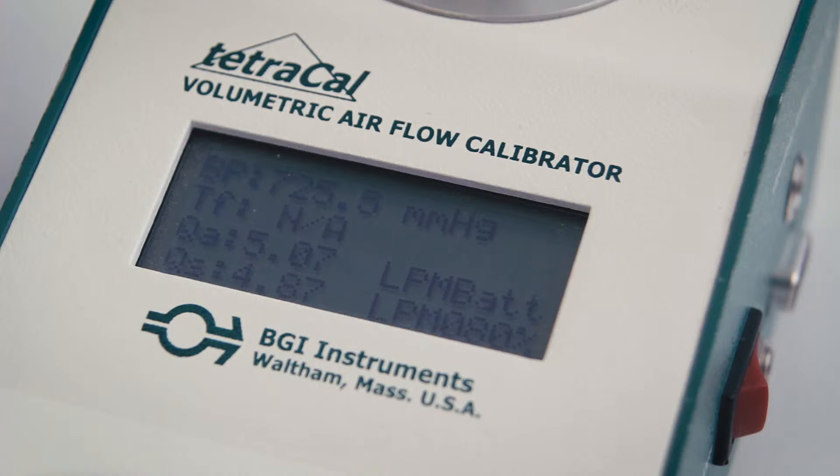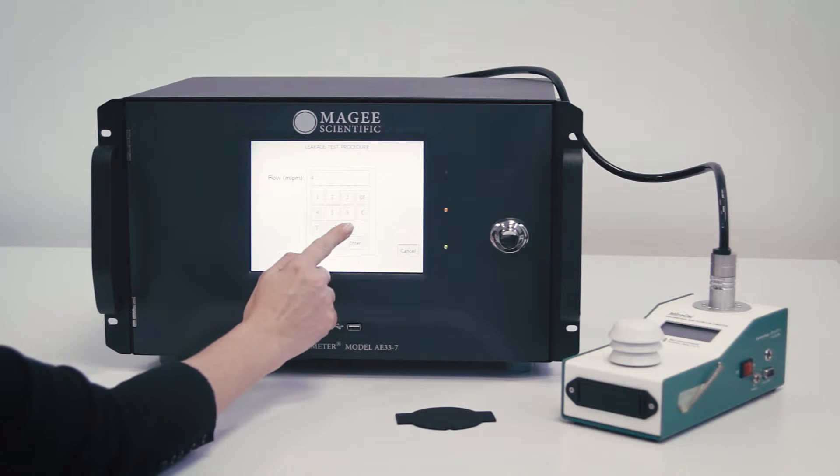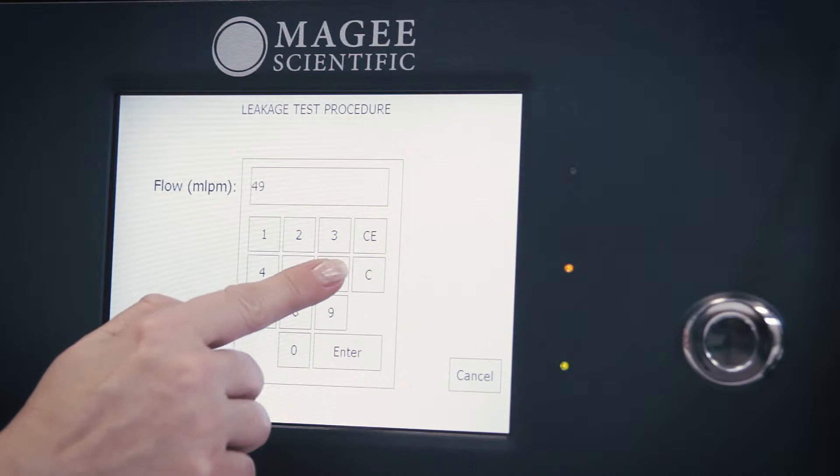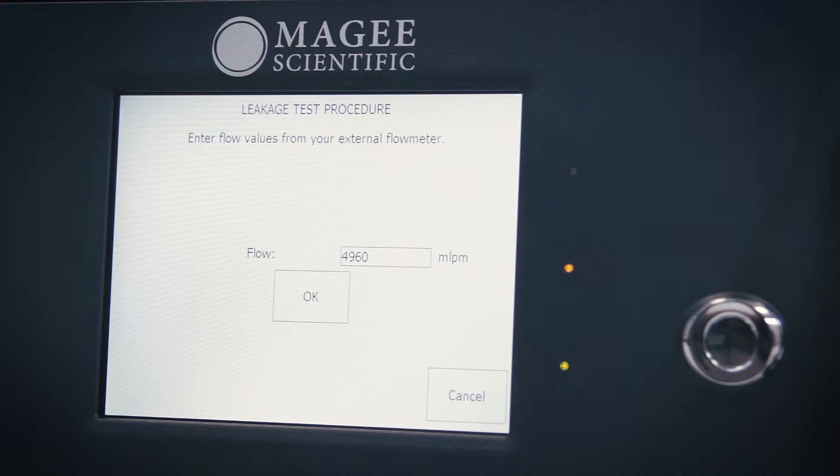Observe the flow measured by your flow meter. Make sure that your flow readings are reported at standard conditions. Press the input box field and enter the flow from the external flow meter. Units are milliliters per minute. Confirm by pressing OK.